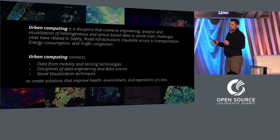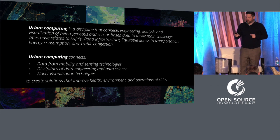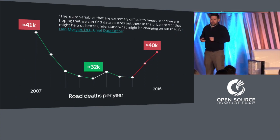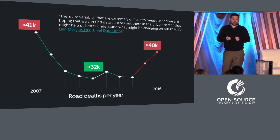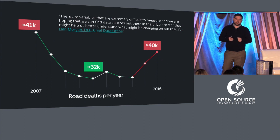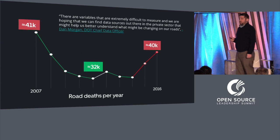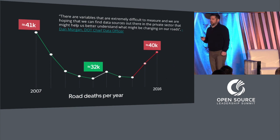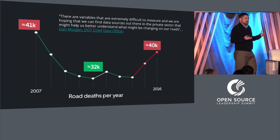To help that sink in, I want to walk through a brief example of how we're thinking about urban computing in the context of transportation. This graph shows, over the last decade, traffic fatalities. We can see it was declining since 2007, and then in 2015 and 2016 there was an increase in traffic fatalities — about 5% year over year. Transportation decision makers and policy makers had some information about this, but they didn't have a lot of detailed granular insight into what was leading to this.